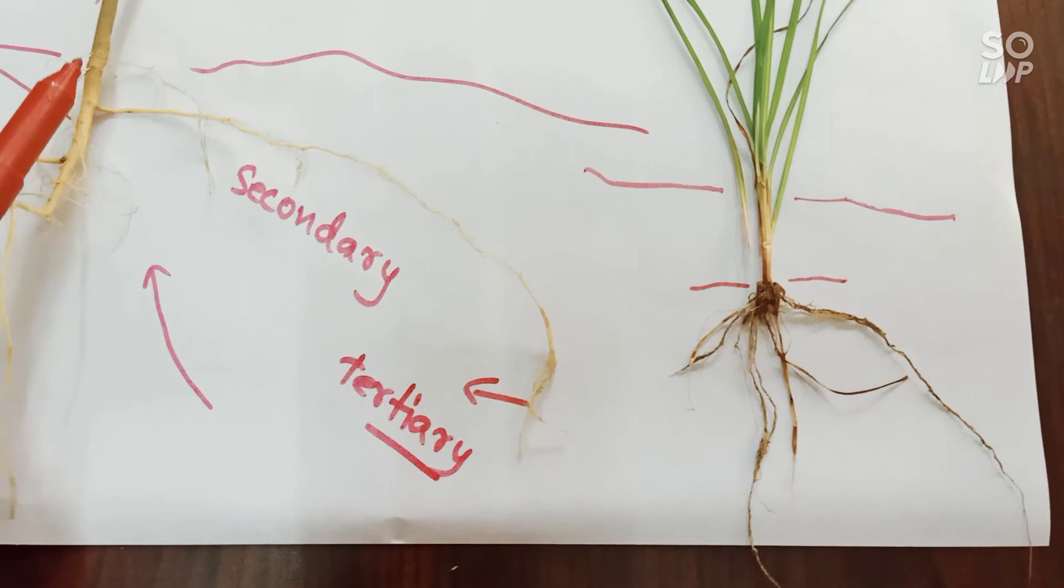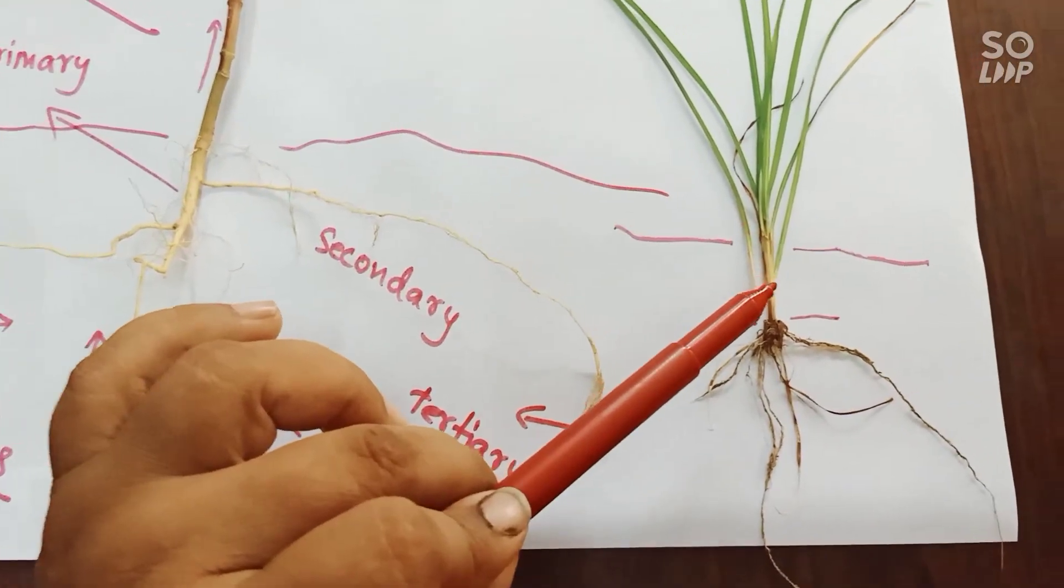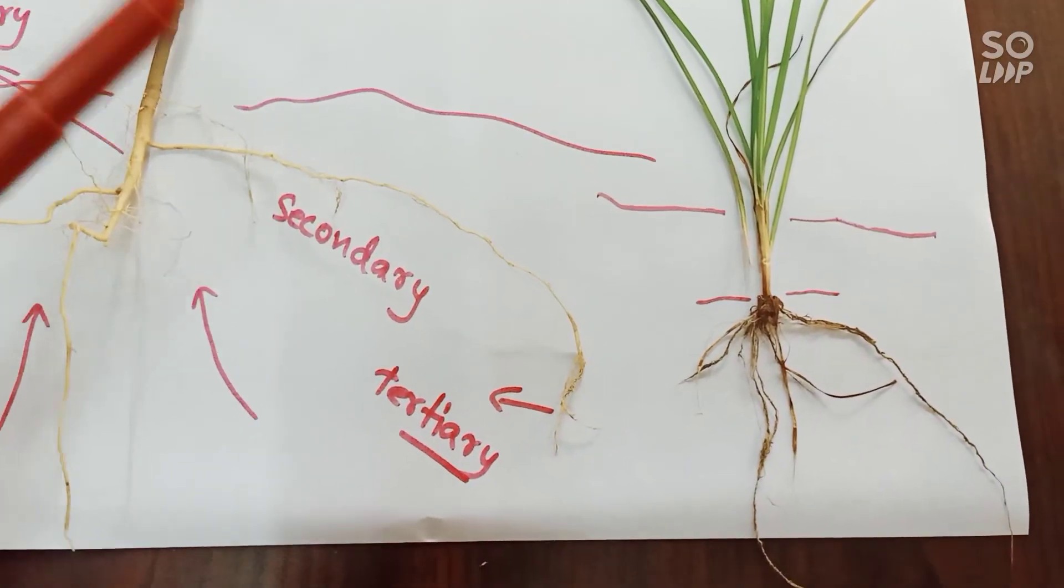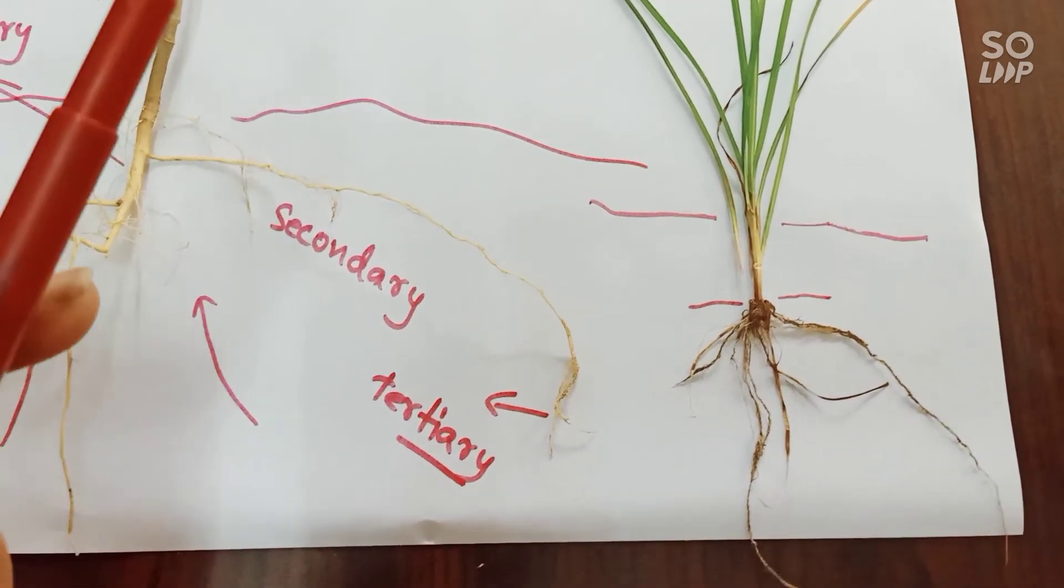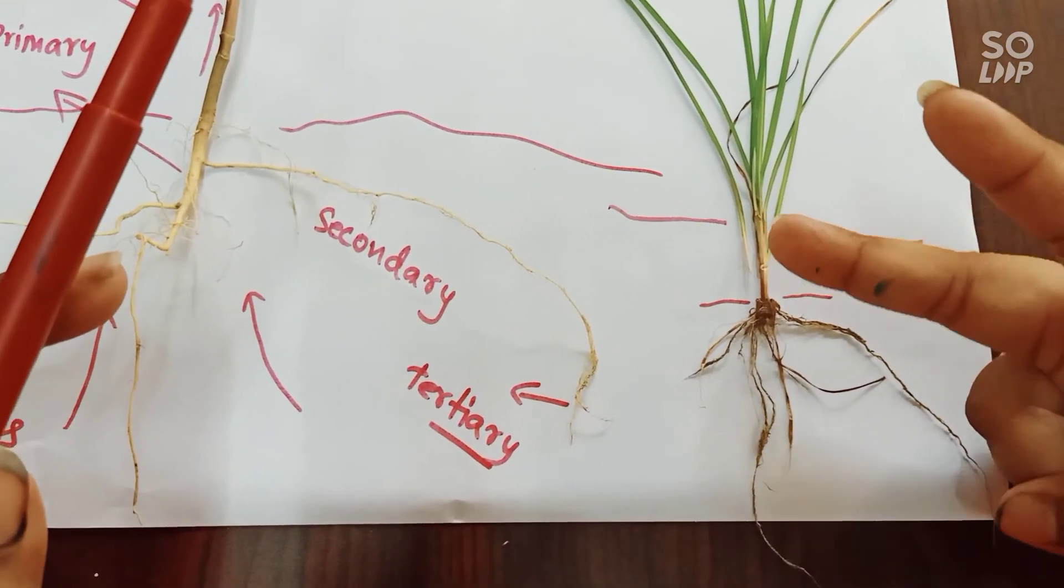Just like tap root was from a dicot, this comes from a monocot. The plants which are having fibrous root are mostly wheat, rice, corn, and grass.